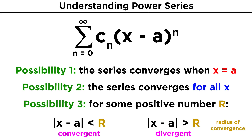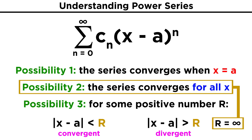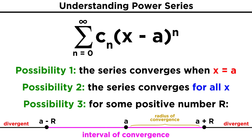In this third case, that number R is called the radius of convergence for that power series. The first two cases also involve a radius of convergence. For the first case, the radius of convergence is zero, as there is only one value that allows for convergence. For the second case, the radius of convergence is infinite, as any value will allow for convergence. We can also describe the interval of convergence as the interval describing all the values of x for which the series converges.